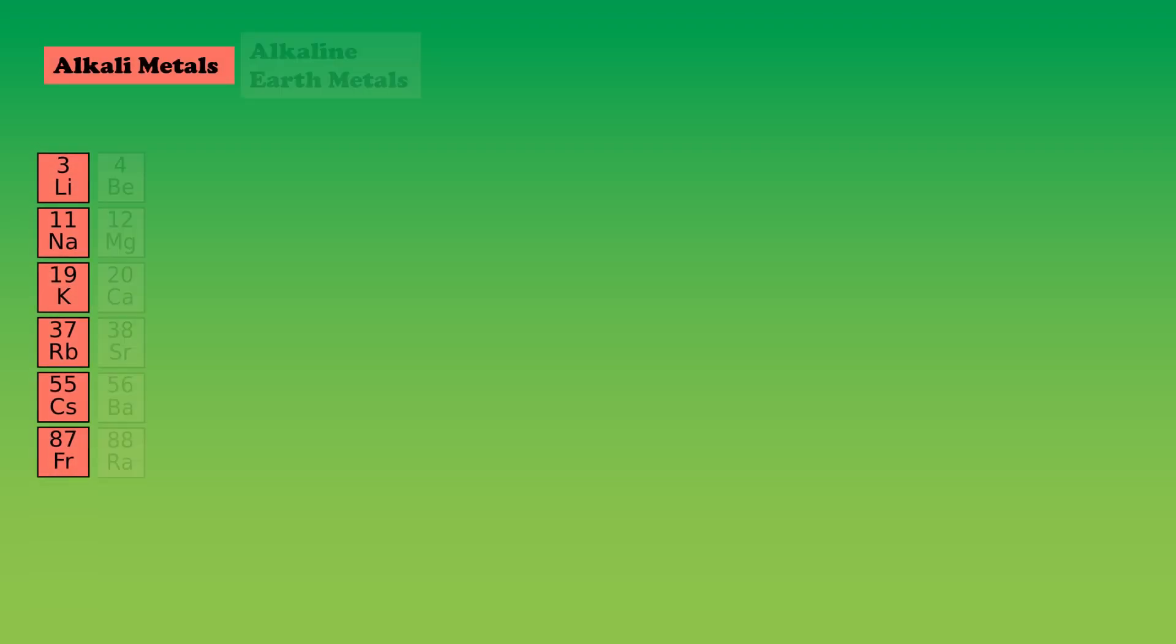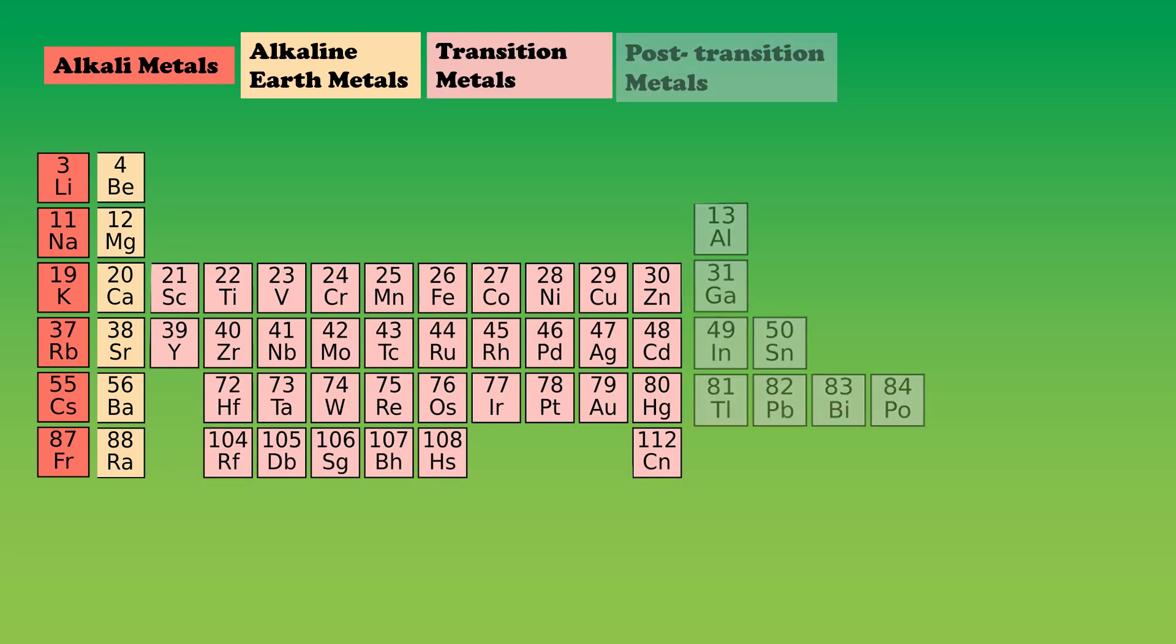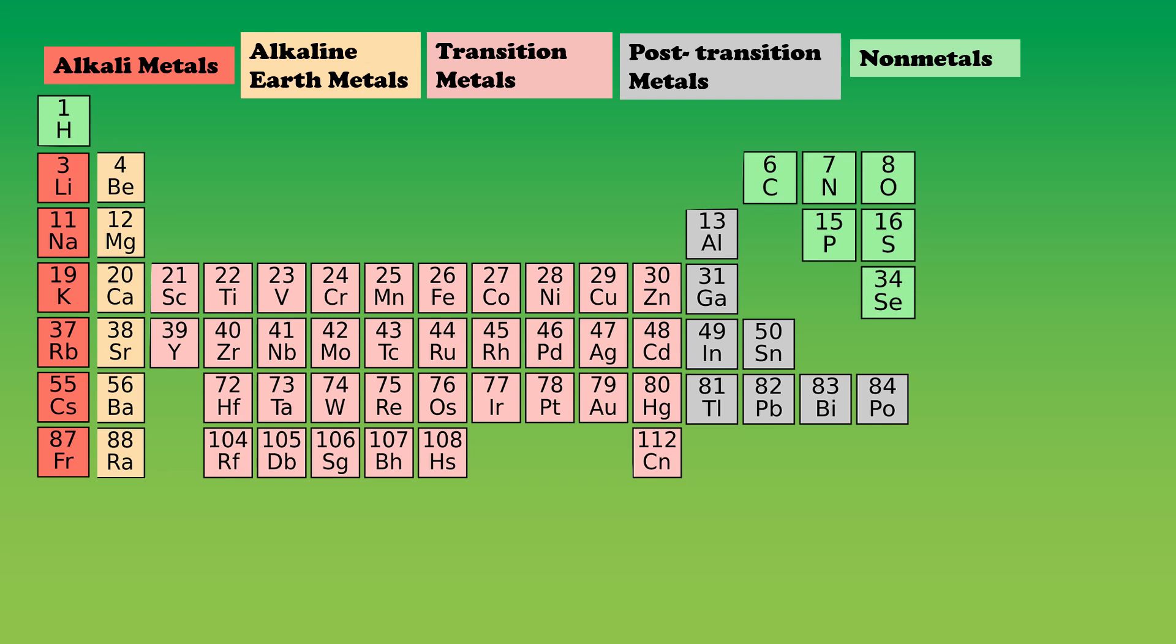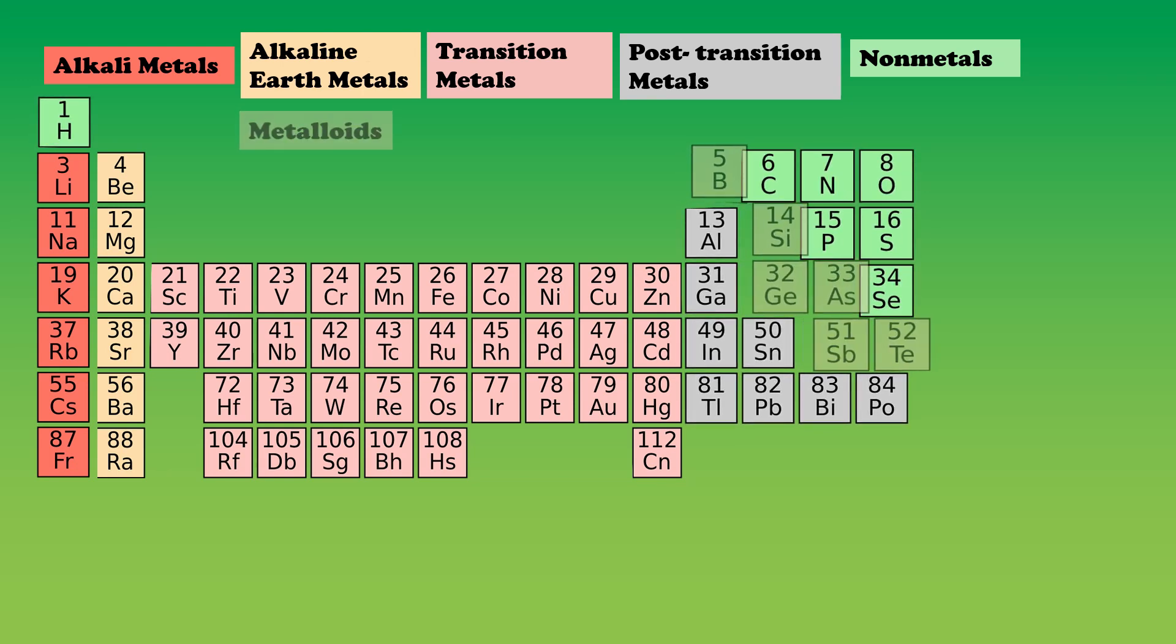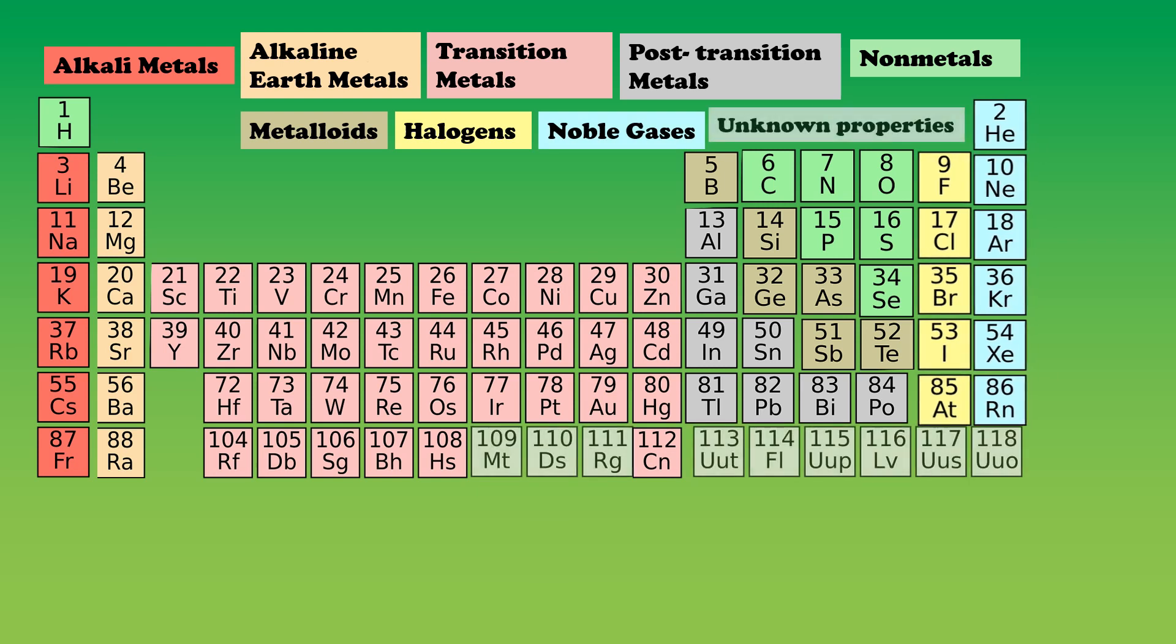The colors in the periodic table represent different categories. We have alkali metals which form alkalis on reaction with water; alkaline earth metals which form alkaline solutions when their oxides dissolve in water; transition metals which are less reactive than group 1 and 2 metals; post-transition metals; non-metals; metalloids between metals and non-metals; halogens which form salts when they react with alkali metals and alkaline earth metals; noble gases or inert gases which are very unreactive; and some elements with unknown properties.